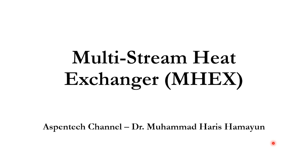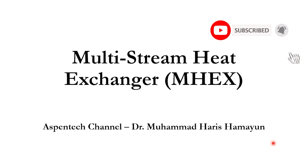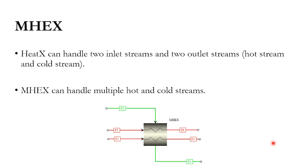So far in the exchangers tab we have seen HeatX and Heater. The Heater was used for both heating and cooling purposes, and HeatX was a simple heat exchanger which deals with one inlet stream of hot and one inlet stream of cold — or we can say two inlet streams and two outlet streams, one hot and one cold.